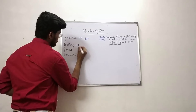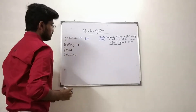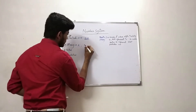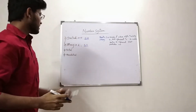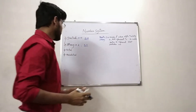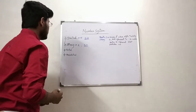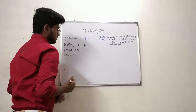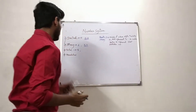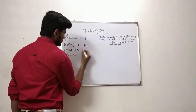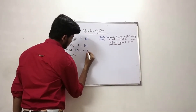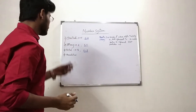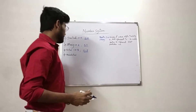In the binary number system, the radix or base is equal to 2. We already know that in the binary number system we have only 2 digits, that is 0 and 1, and these 2 digits represent the binary number system. In the octal number system, the radix or base is equal to 8. We also know that in the octal number system we have 8 digits: 0 to 7.